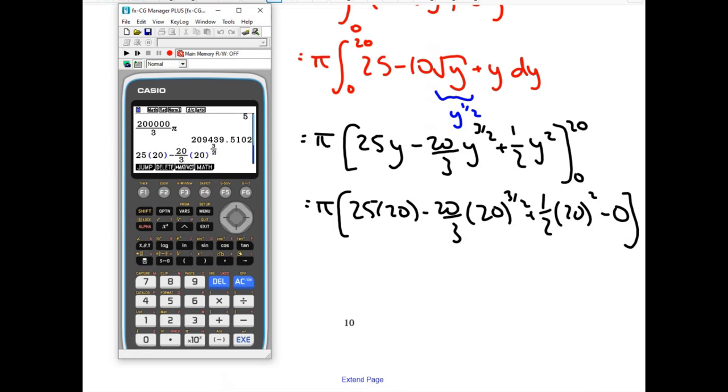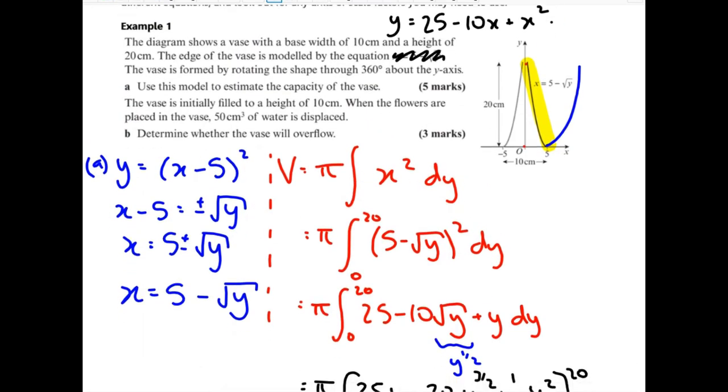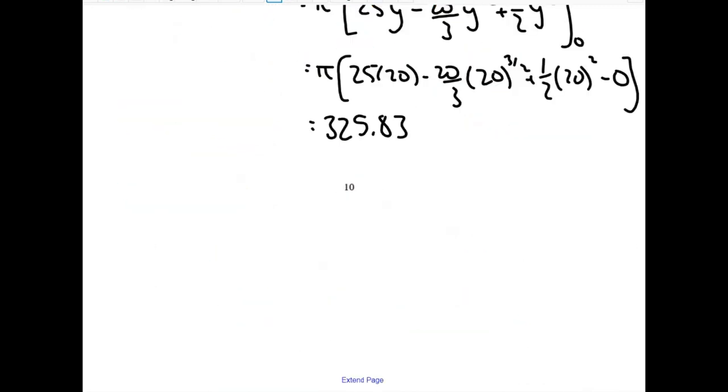So pi times, I'll just write out the substitution. Don't forget to times it by pi at the end as well. I'm just going to double check what the question said. So it just said use the model to estimate the capacity of the vase. It didn't say anything about the accuracy of my answer. As long as you're sensible, it's fine. We do want units as well. So the units are in centimeters. So I'm going to give this as 3760 centimeters cubed. Any sensible degree of accuracy is fine.